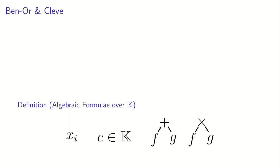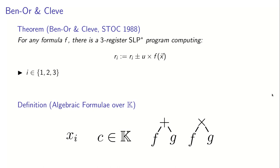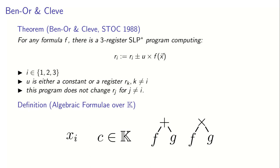Now let me prove to you an old result by Michael Ben-Or and Richard Cleve. Here's a definition. An algebraic formula over the ring K is either a variable, or a constant in the ring, or a sum of two formulas, or a product of two formulas. Now Ben-Or and Cleve have this theorem — the Ben-Or-Cleve theorem — which says that for any formula F, there's a three-register transparent straight-line program which does the following computation: it changes register Ri, and it either adds or subtracts to it U times F, where I is one of the three registers, and U is either a constant or some register RK which is different than I. Furthermore, this program does not change any other register — it might use the other registers, but it always returns them to their value at the beginning of execution. So the only register that ends up being changed is Ri.